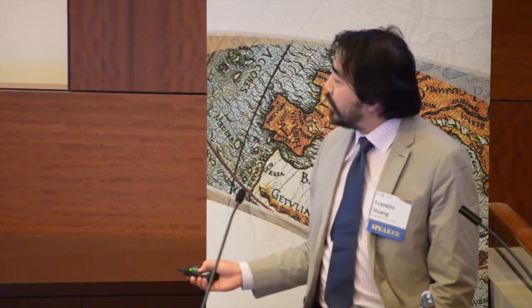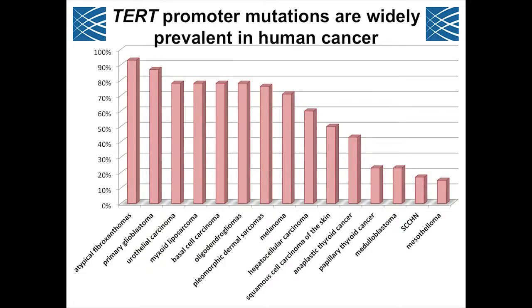Subsequent papers published after our presentation — over a dozen to two dozen papers — have looked for these recurrent TERT promoter mutations across many cancers, showing they are highly prevalent. I'll draw attention to glioblastoma, where they're present in 80 to 90% of all glioblastomas, melanoma as described, hepatocellular cancer at about 66%, thyroid cancer, medulloblastoma, and a number of other cancers. These are the most common mutations in these particular cancer types.